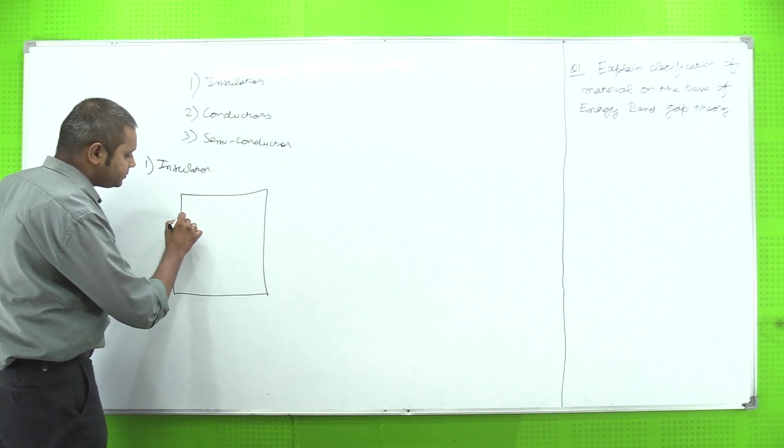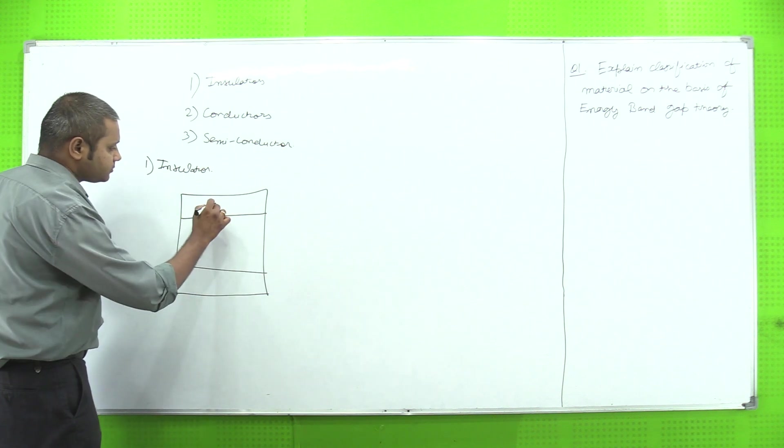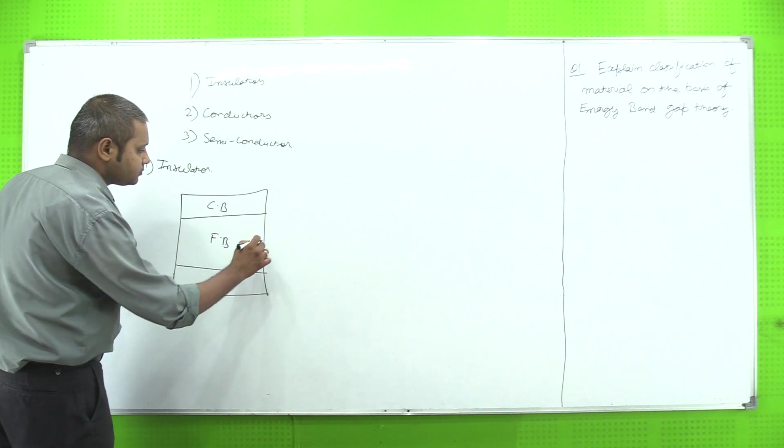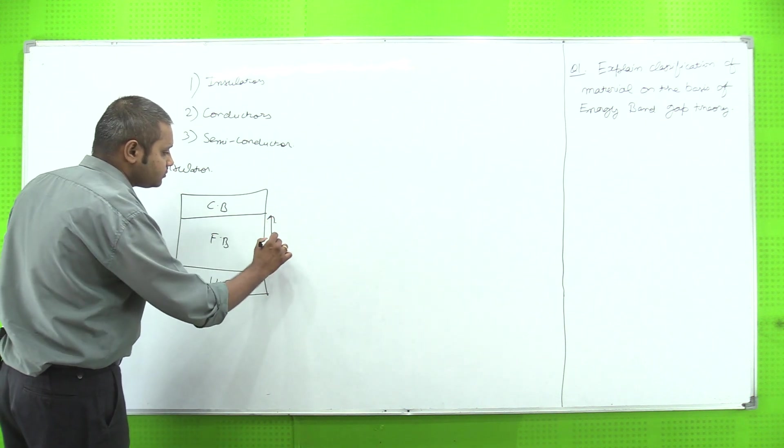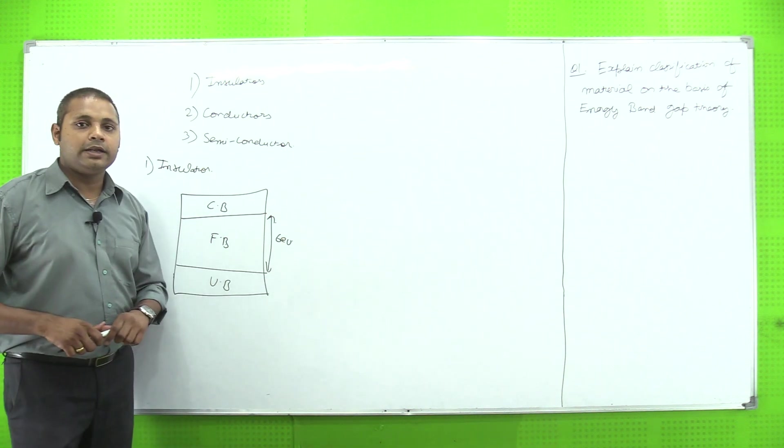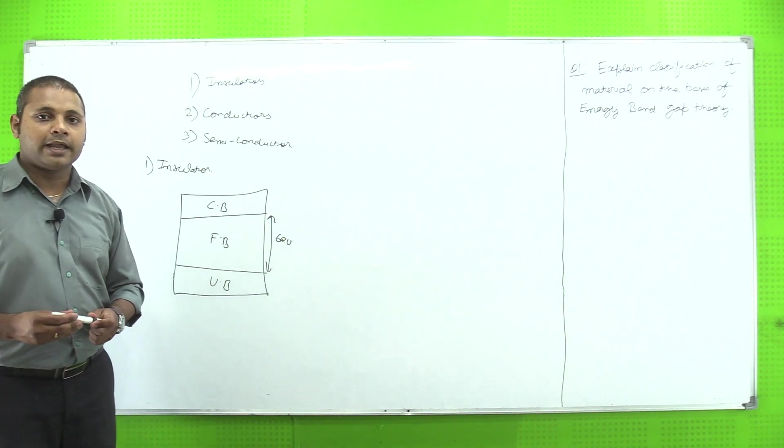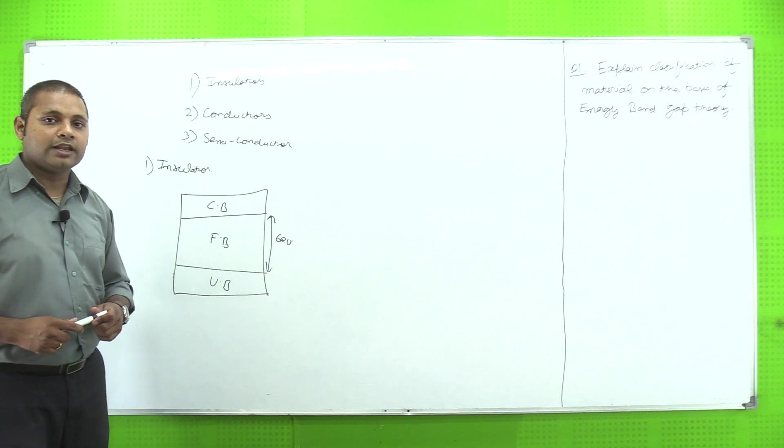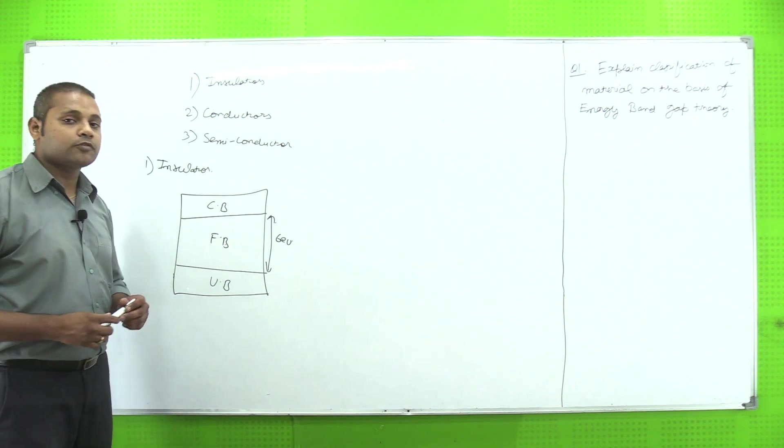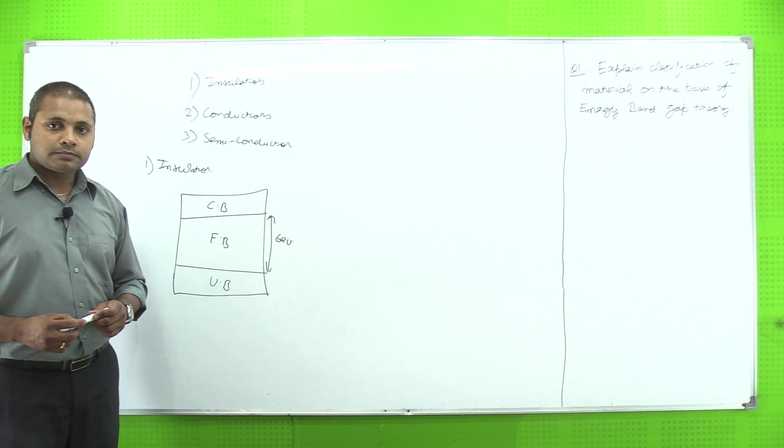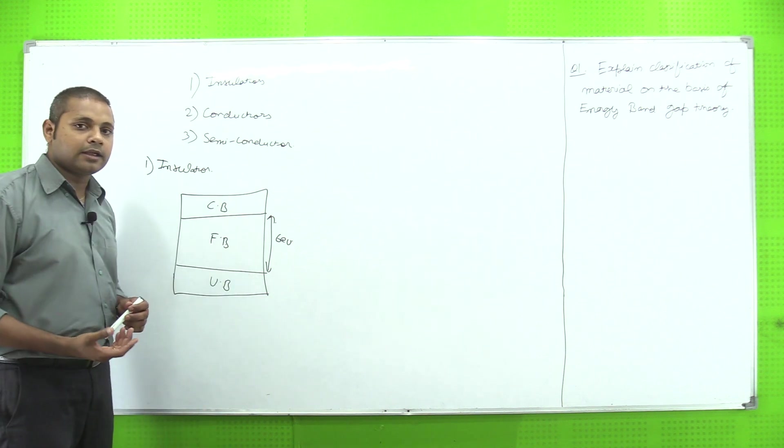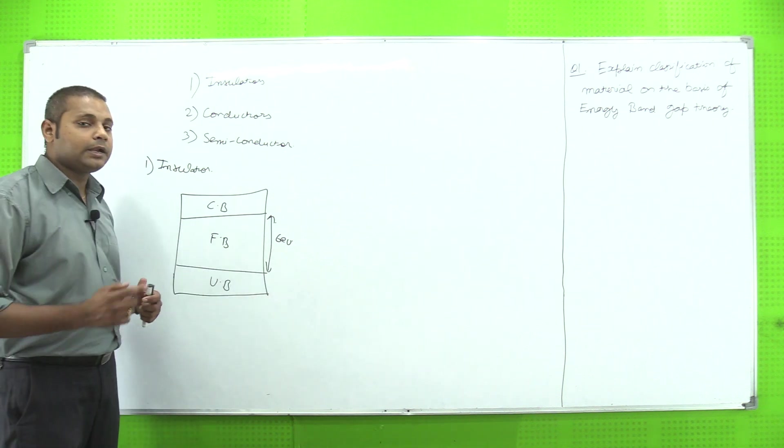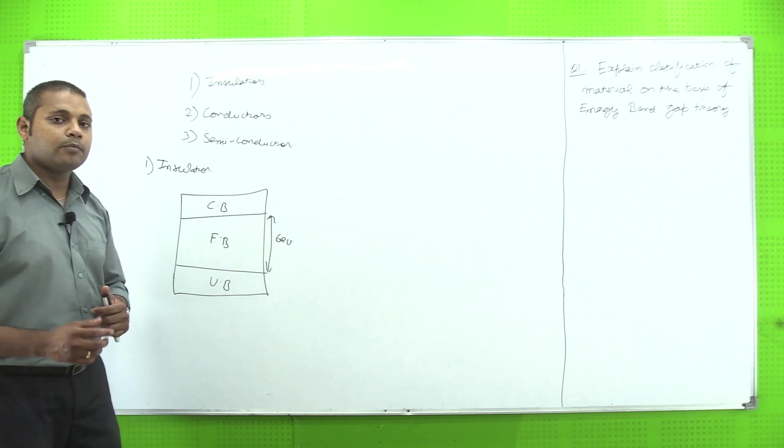Inside the insulator, if we draw the energy band gap diagram, on the top there will be a conduction band and at the bottom there will be a valence band, and between them, in the center, there will be a forbidden band. Now, what is the energy band gap showing? That there is a 6 electron volt forbidden gap, and 6 electron volt forbidden gap is a lot of gap.